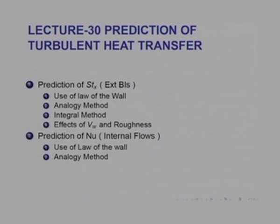I will first deal with external boundary layers in four different ways: use of the law of the wall for situations with no suction or blowing; analogy methods; the integral method using the integral energy equation to handle effects of pressure gradients and wall temperature variations; and extension to roughness, suction, and blowing. Likewise, we will look at prediction of Nusselt number in pipe flows using the law of the wall and analogy methods.